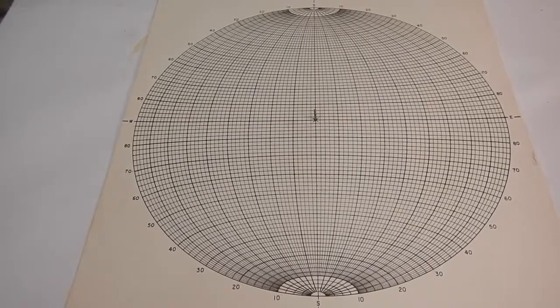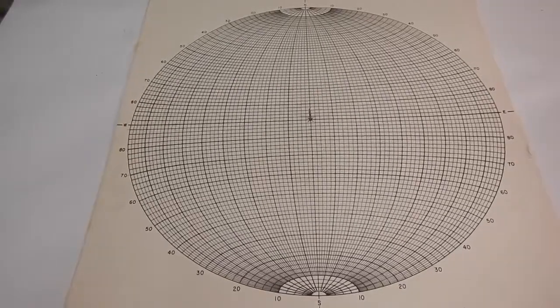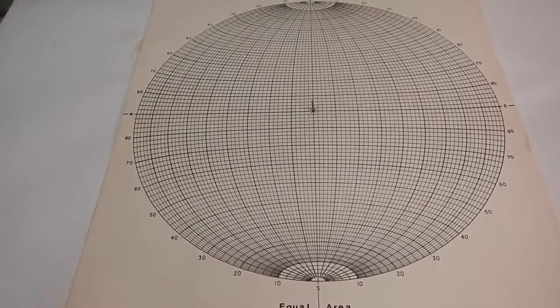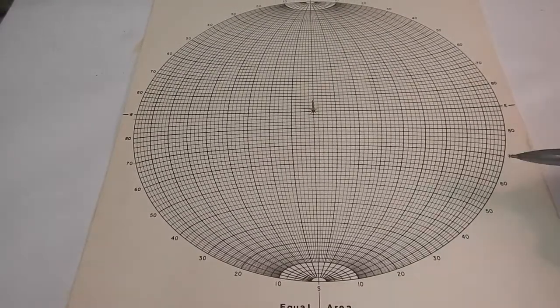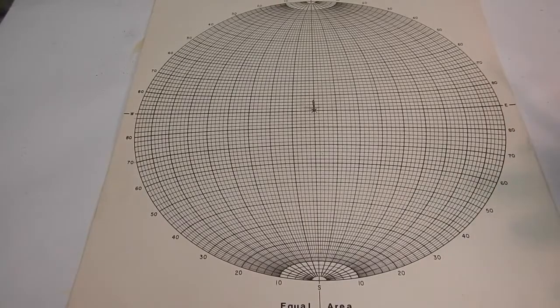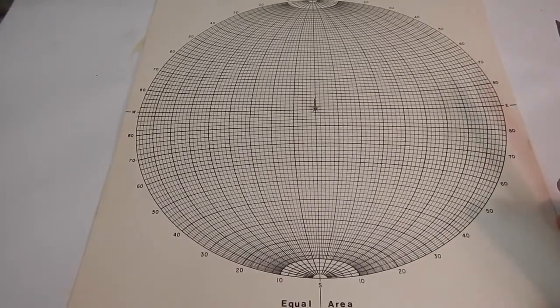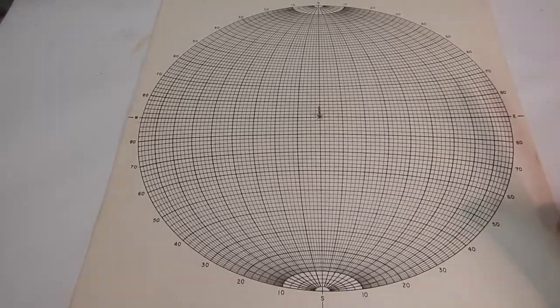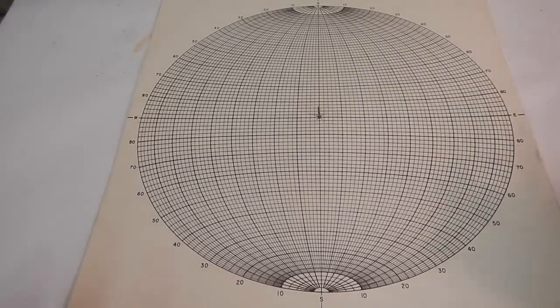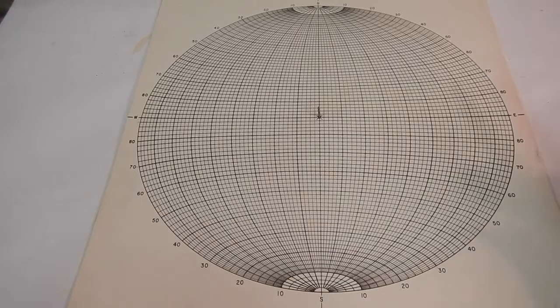So if we look at this, this is our stereo net. This is an equal area stereo net, so each of these little boxes on here has equal area. There's also an equal angle stereo net, but I believe we will just be focusing with equal area stereo nets, at least for this structural geology course.